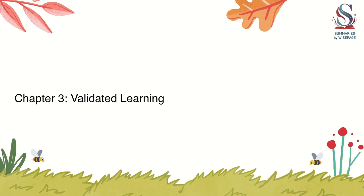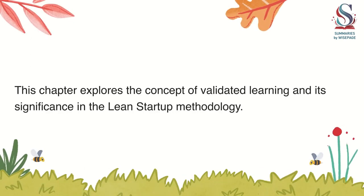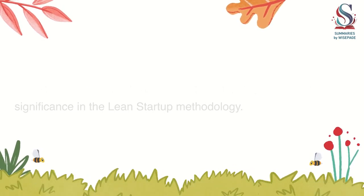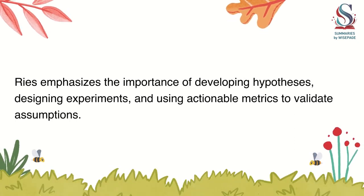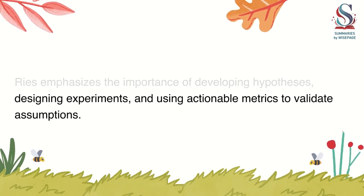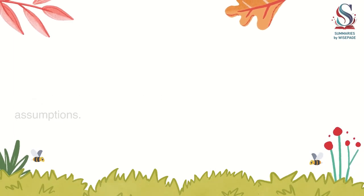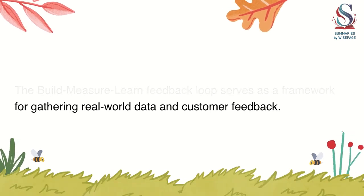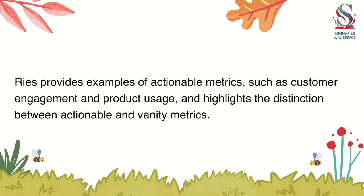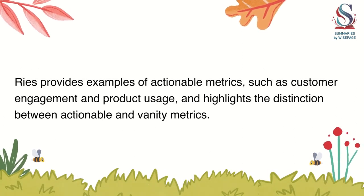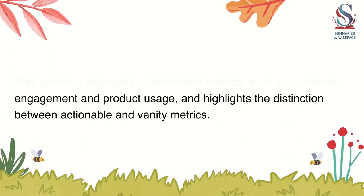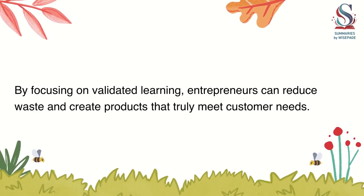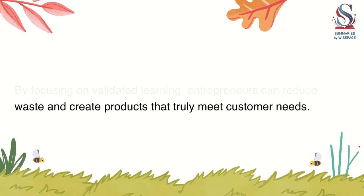Chapter 3: Validated Learning. This chapter explores the concept of validated learning and its significance in the Lean Startup methodology. Ries emphasizes the importance of developing hypotheses, designing experiments, and using actionable metrics to validate assumptions. The Build-Measure-Learn Feedback Loop serves as a framework for gathering real-world data and customer feedback. Ries provides examples of actionable metrics, such as customer engagement and product usage, and highlights the distinction between actionable and vanity metrics. By focusing on validated learning, entrepreneurs can reduce waste and create products that truly meet customer needs.